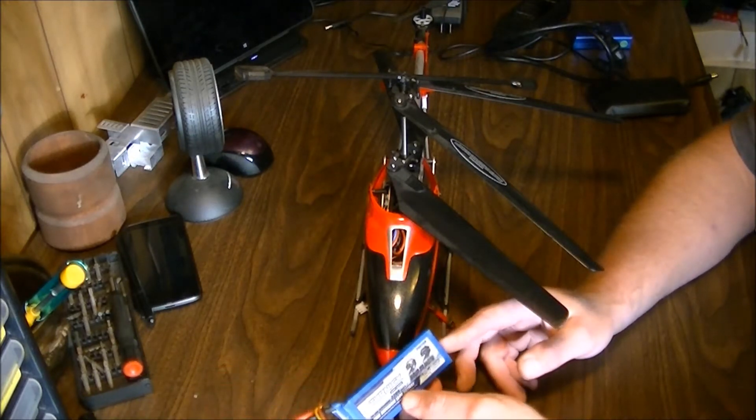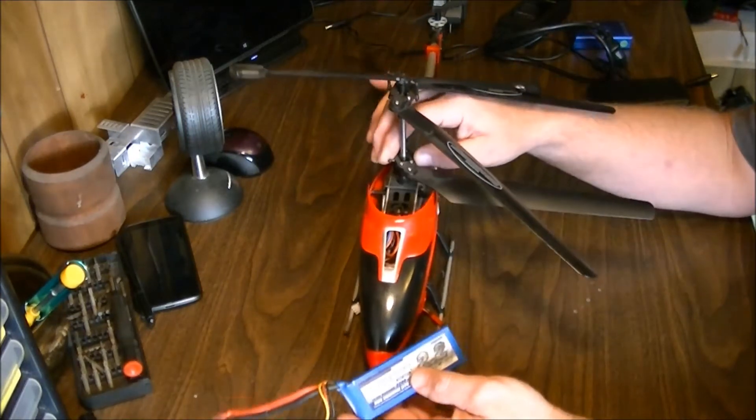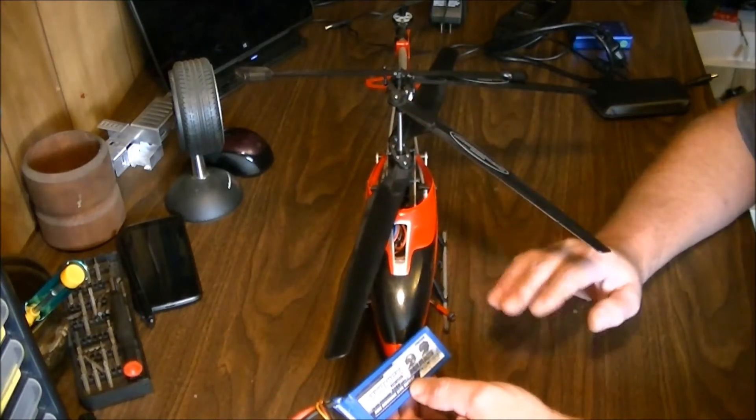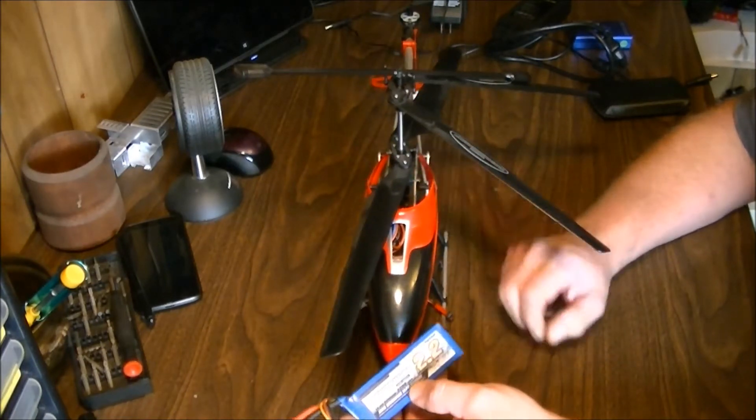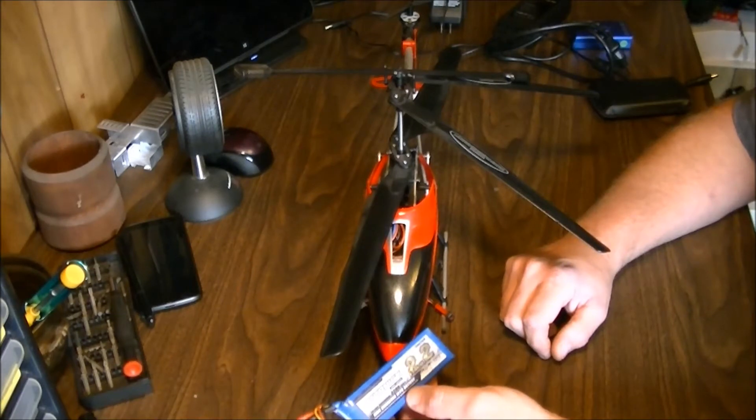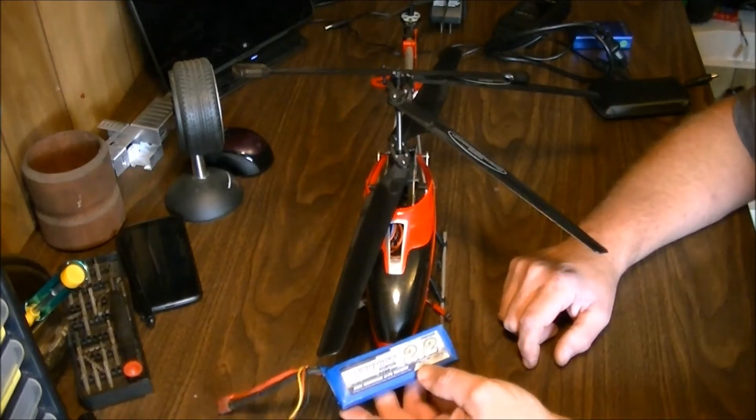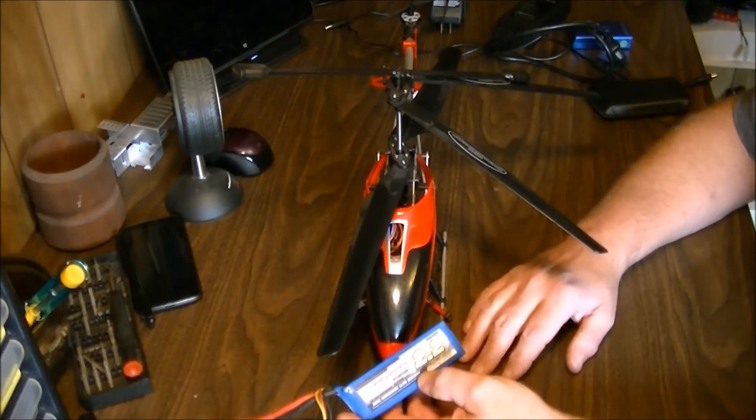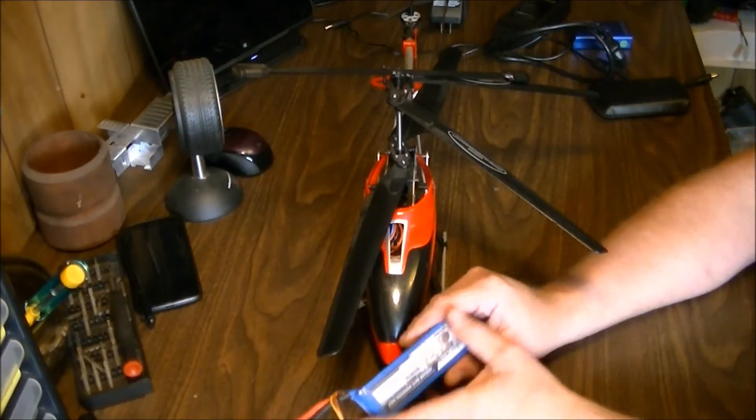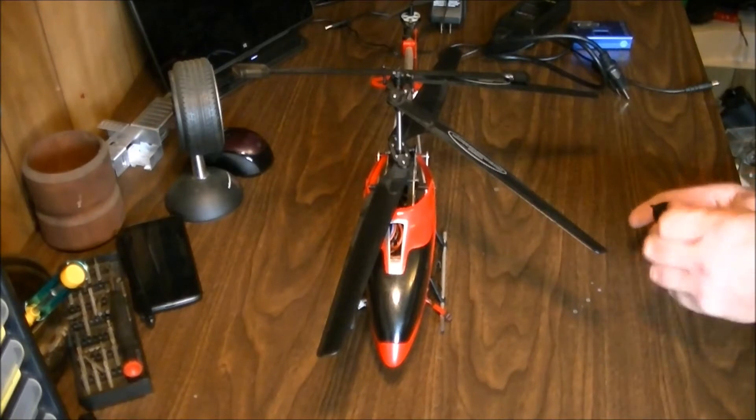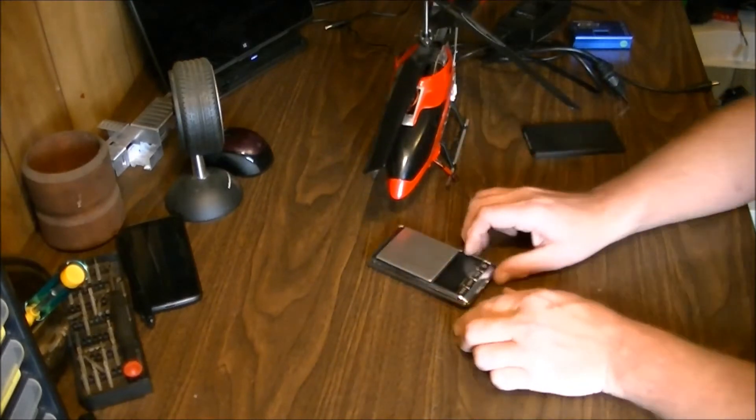You've got to watch discharge rates on lipo batteries, especially when you start getting near the full throttle area. This has been known to damage machines. So you want to keep a lower discharge rate on this kind of helicopter. Something around the 10 or 15c discharge rate is going to be absolutely safe for this helicopter without any issues whatsoever. So we're going to go over some weights for you first, just to give you an idea of what you're dealing with for weight classes in these different batteries.